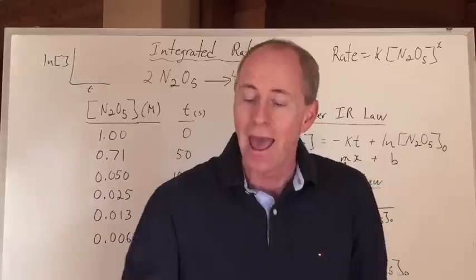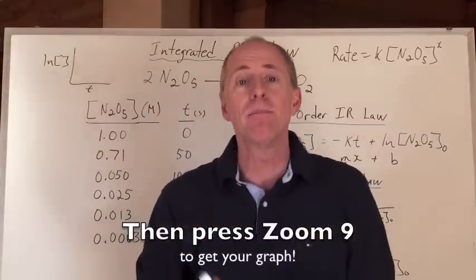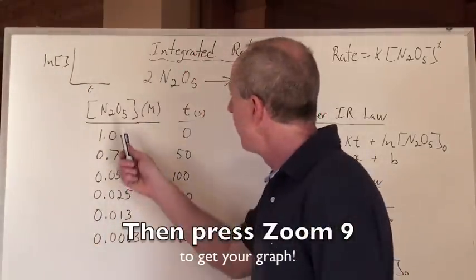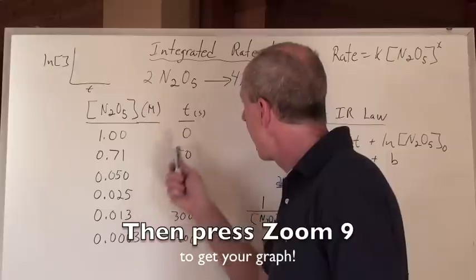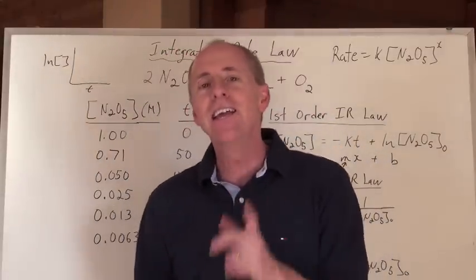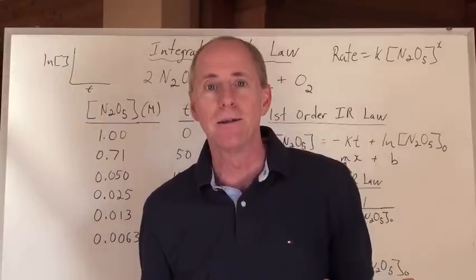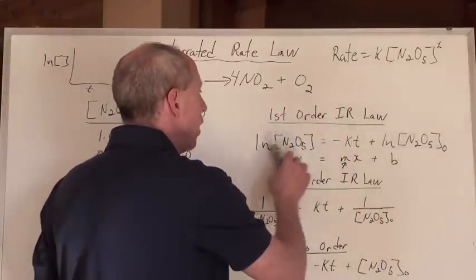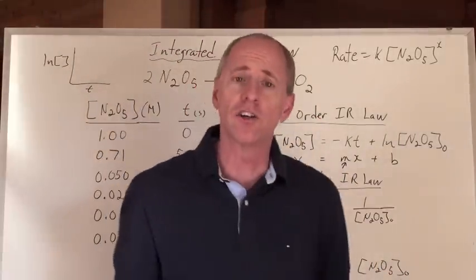And you're able to then make a graph out of the natural log of these numbers and their corresponding times in the X axis. If you get a straight line, then like I said, you've got first order.